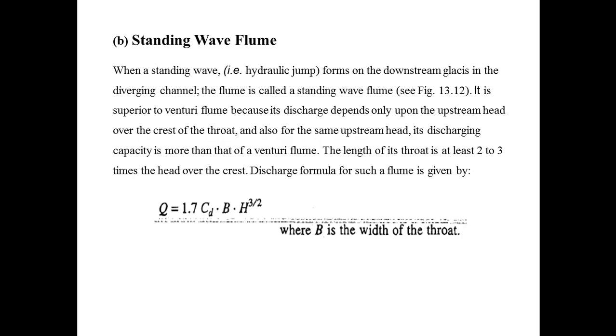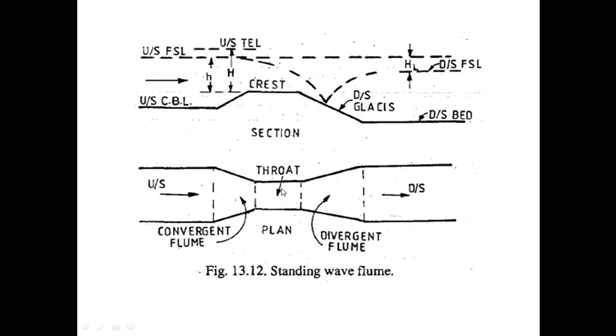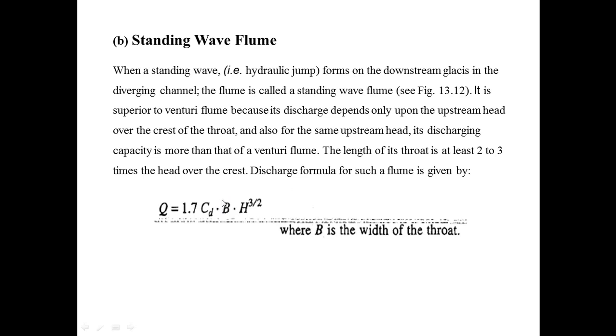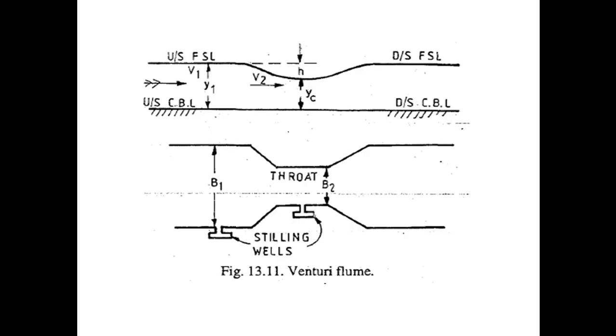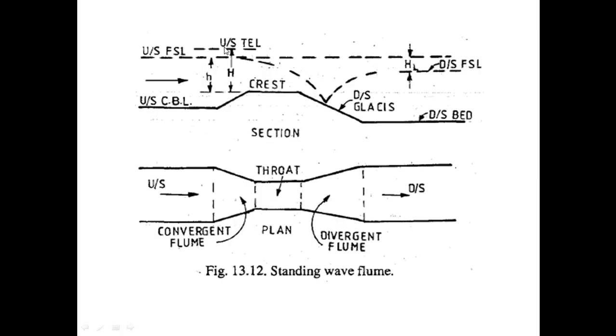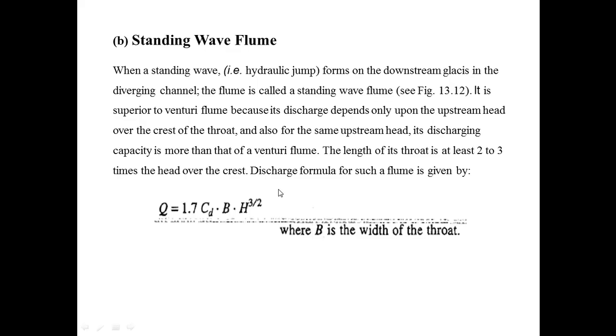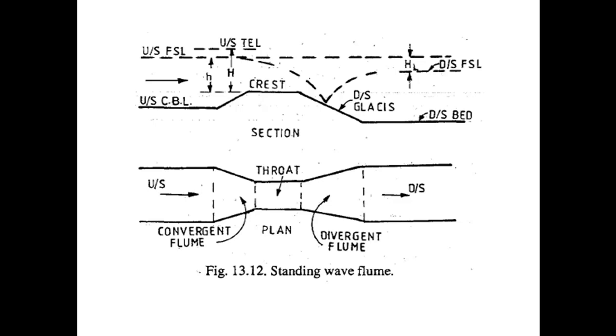The discharge formula for such a flume is given by Q = 1.7 Cd · b · H³/². Here b is the width of the throat, Cd is the coefficient of discharge for the standing wave flume and its value varies from 0.95 to 1, and H is the head over the crest. By taking the value of H and putting the value of Cd, you will get the discharge across the channel with the help of standing wave flume. This is the end of our today's lecture.